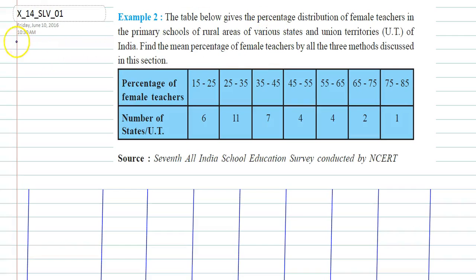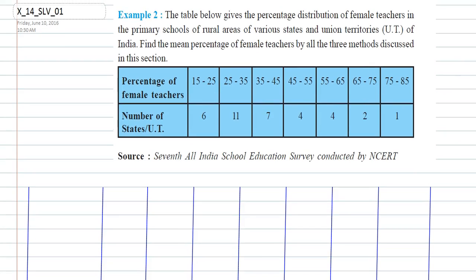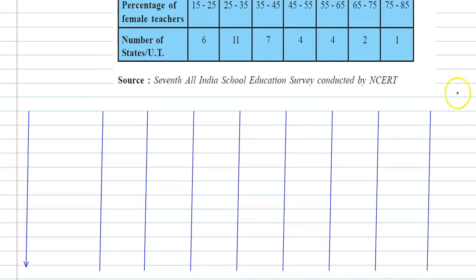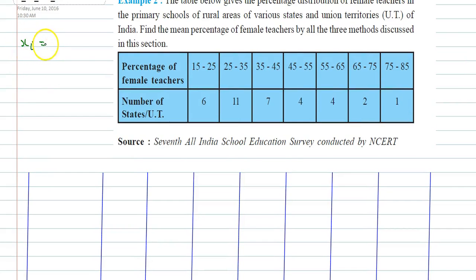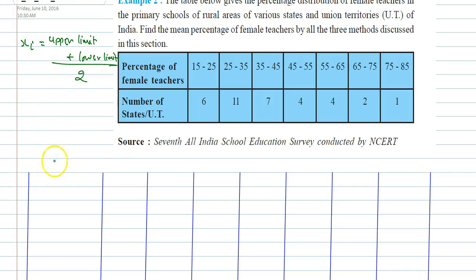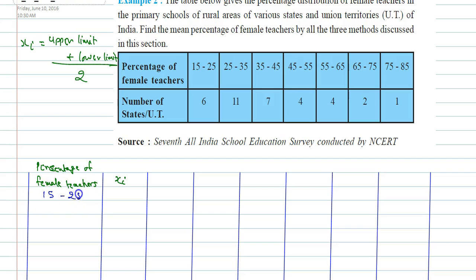In this question, the given information is in interval form, so first we need to calculate Xi. Xi is defined as the average of the interval, which is upper limit plus lower limit divided by 2. Here, if I write this column as percentage of female teachers, I can write Xi for each interval.